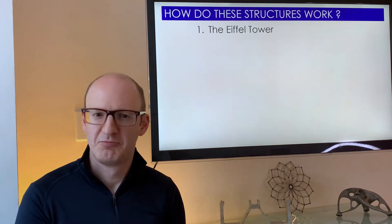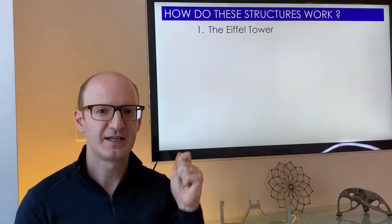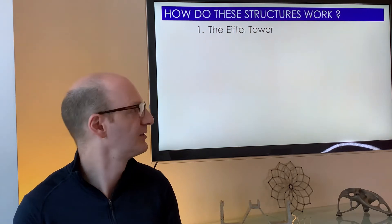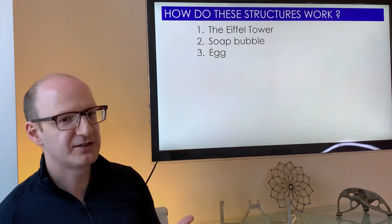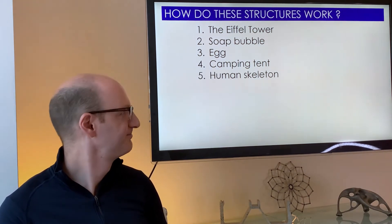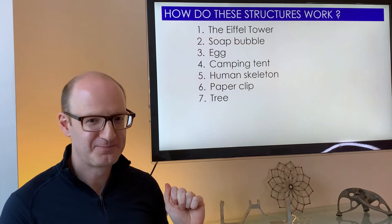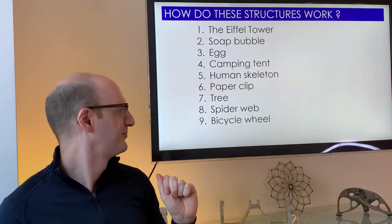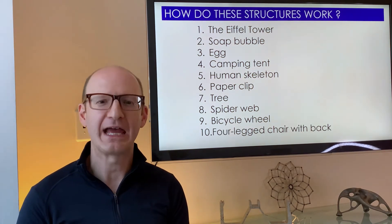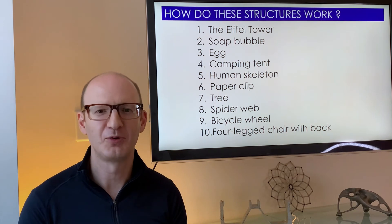How do these structures work? The Eiffel Tower is number one, and there are ten total, in increasing complexity of structural behaviour — not necessarily of how they look. Then: a soap bubble, an egg, a camping tent, the human skeleton, a paper clip at number six, a tree, a spider web, a bicycle wheel, and a four-legged chair with a back — the kind of simple chair you might sit on at a cafe table or at your office.